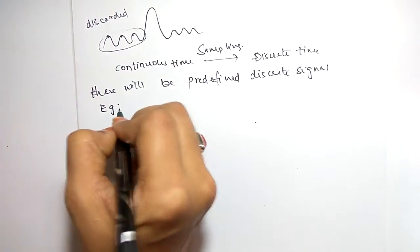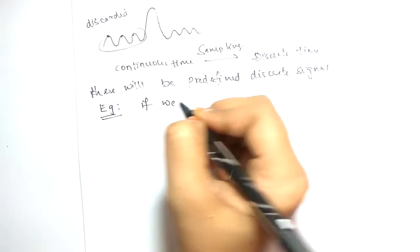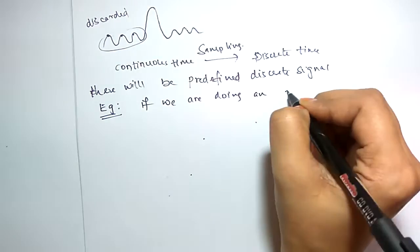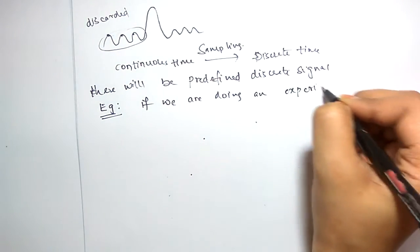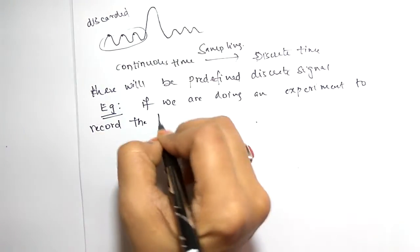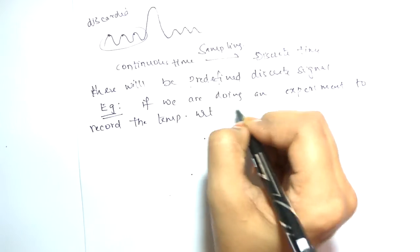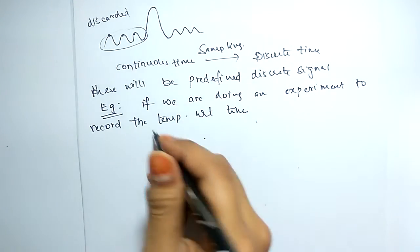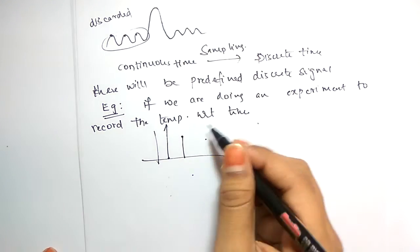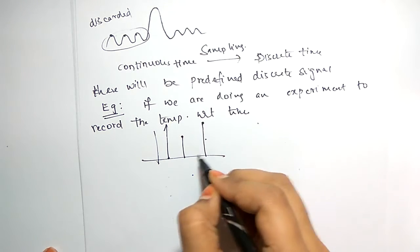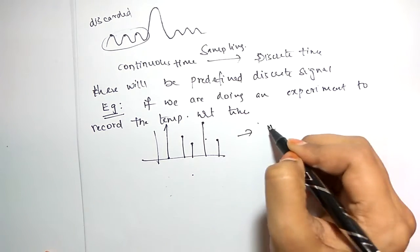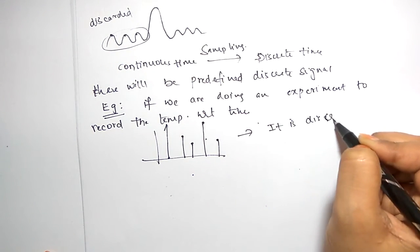For example, if you are doing an experiment to record the temperature with respect to time for every one hour, the resulting data is a discrete signal. The temperature values recorded at each hour — going up, coming down, and so on — form a discrete signal that was never sampled from a continuous source.